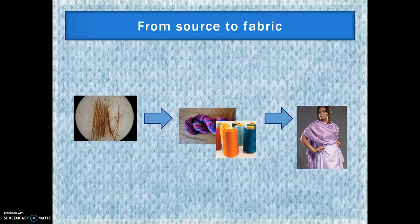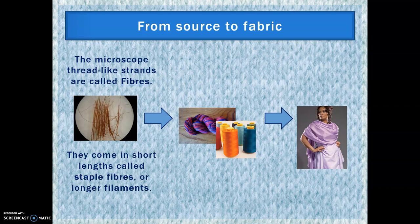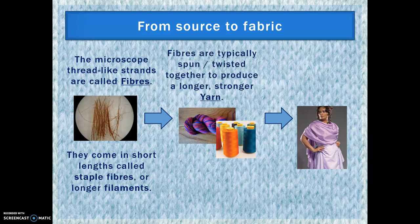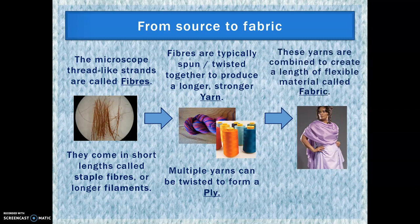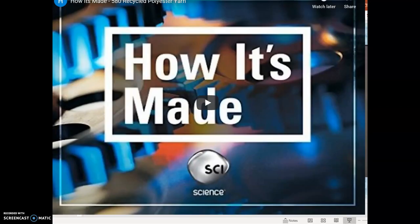Now let's talk about how we get from fibre to fabric. We start with microscopic thread-like strands called fibres — they come in short lengths called staple fibres, or long lengths called filaments. These fibres are spun or twisted together to produce a long, strong yarn. These yarns are then twisted together to form a ply — two yarns together is two ply, three yarns is three ply. These yarns are then combined to create a length of flexible material called fabric, which is sewn into garments and other products. There's a great video on how yarn is made from recycled polyester bottles.